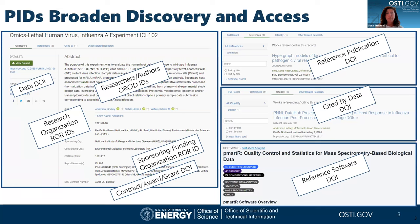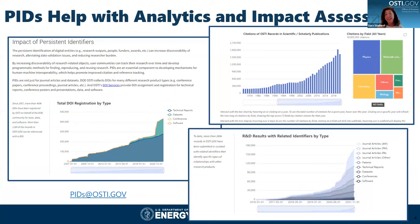The original data record references an article and a piece of software, and was cited by another dataset. This helps communities not only find and reuse the data, but also see the larger research life cycle and understand research impact. Another benefit of persistent identifiers is helping with analysis and impact assessment — citation analysis and related identifier metrics facilitate impact evaluation through linked PIDs within the associated metadata. We also provide visualizations of these PID services at pids.osti.gov.